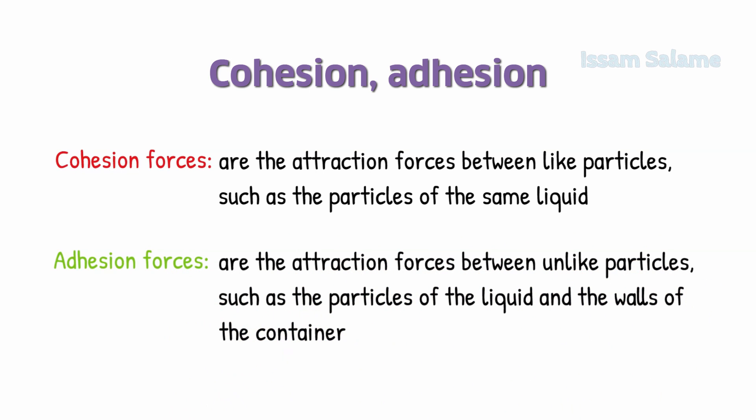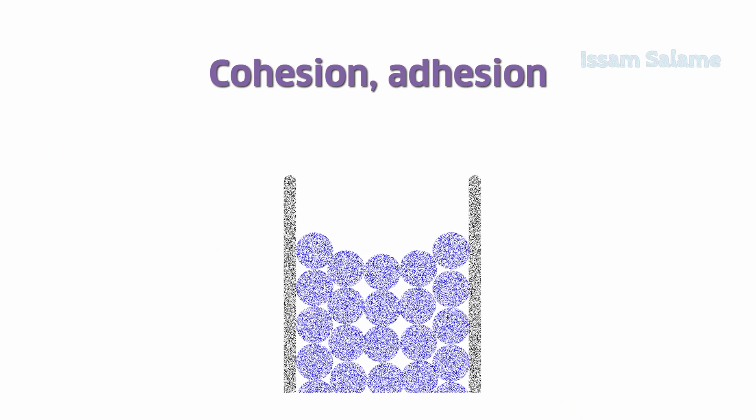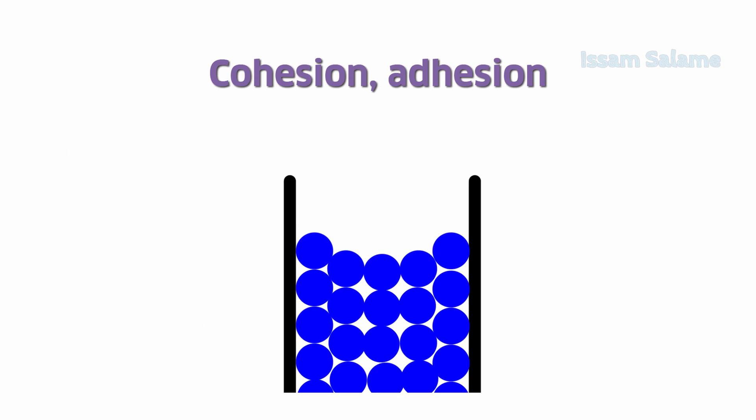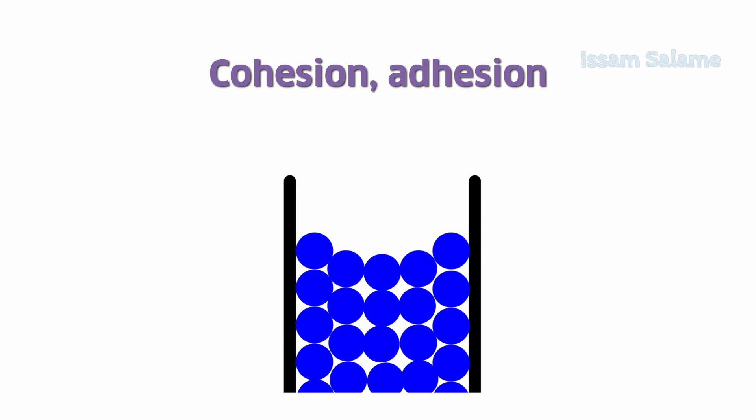To understand why the surface of the water has a U-shape or concave meniscus, we have to look at the forces acting on the surface particles. For example, a particle in the middle is under the effect of cohesion forces, since it is surrounded by like particles of the same liquid.